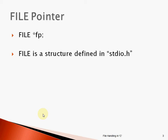Now let's start with a file pointer. A file pointer is a backbone of file handling in any programming language. The declaration is FILE *fp. FILE in all capital letters is a structure defined in the standard input/output header file. C language is case sensitive, so FILE must be written in capital letters only. This pointer holds the address location of the file, and fp is the variable name. We are going to use fp as a file pointer to perform any operation in file handling.